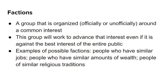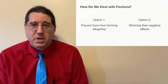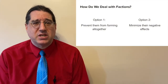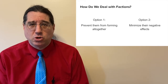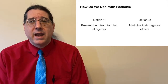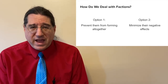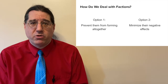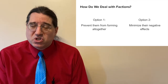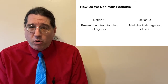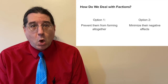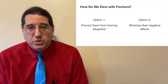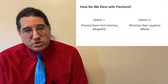This shows that factions can pose a threat to the freedom of the people. So what did Madison think we could do about the problem? He builds his argument by presenting two options and then evaluating each one. To the question of what we should do about factions, here are the two options: we can either stop people from forming groups based on what they believe, or we can stop those groups from doing too much damage to the country.